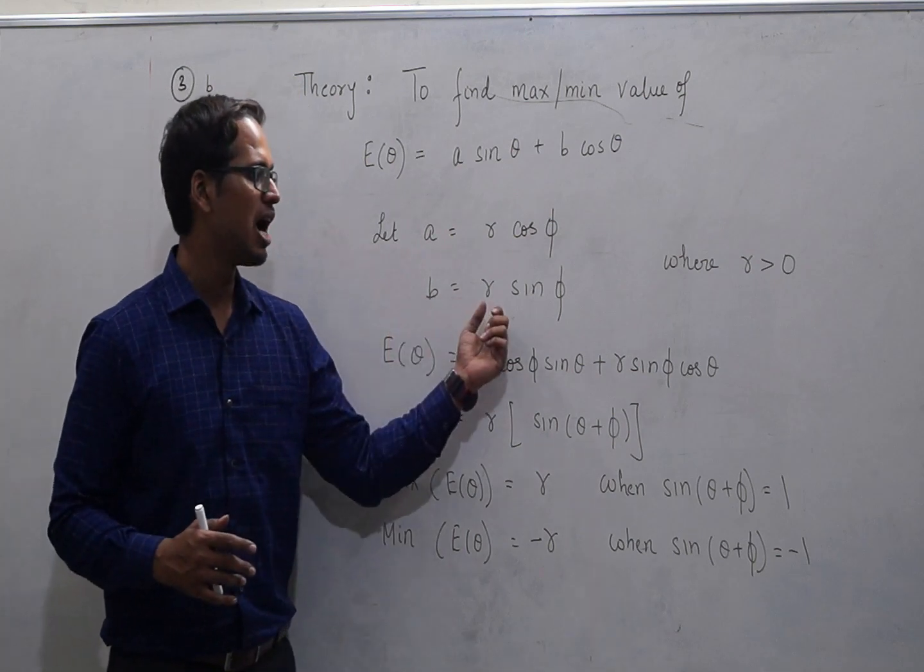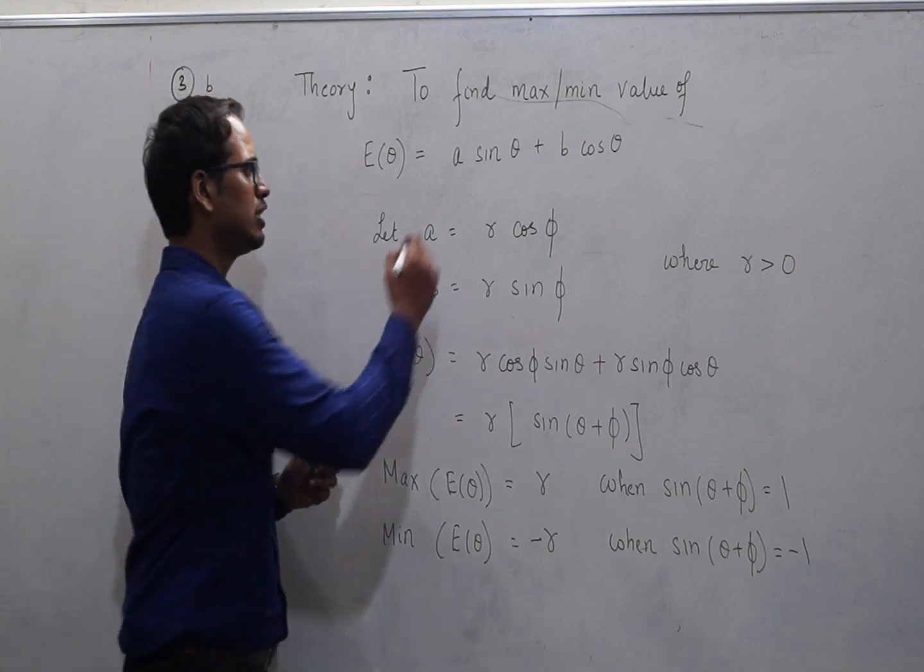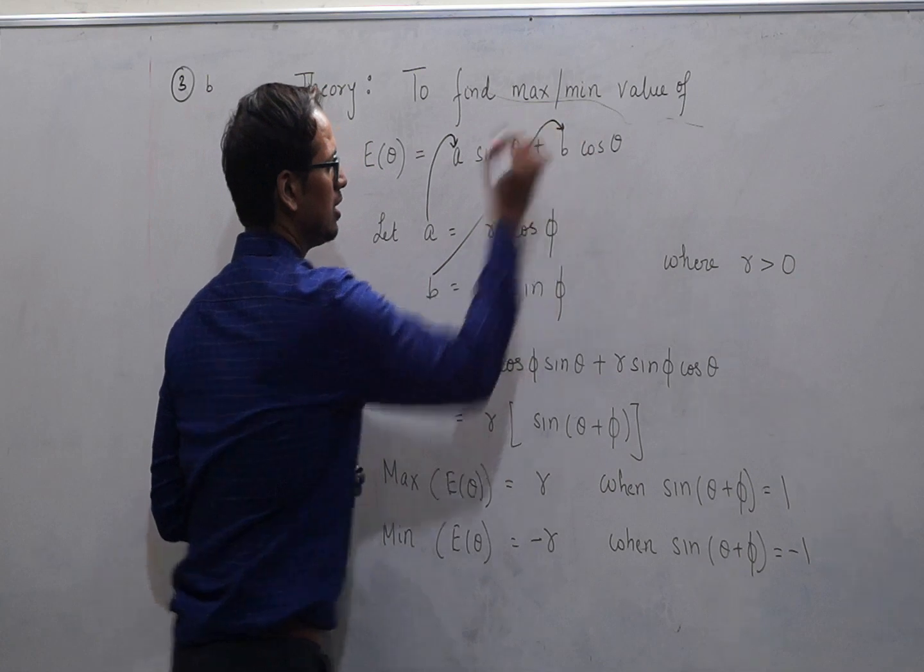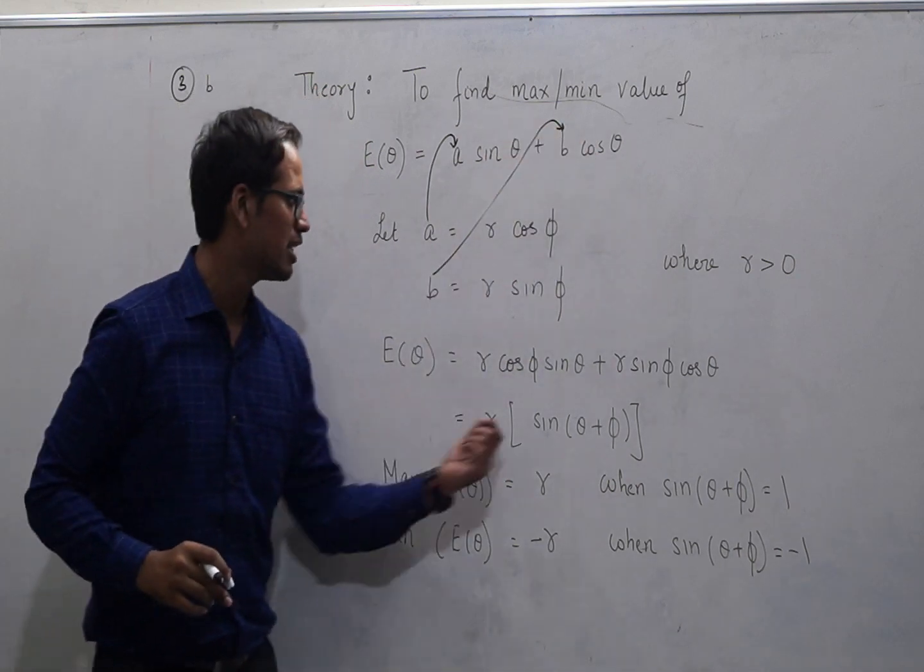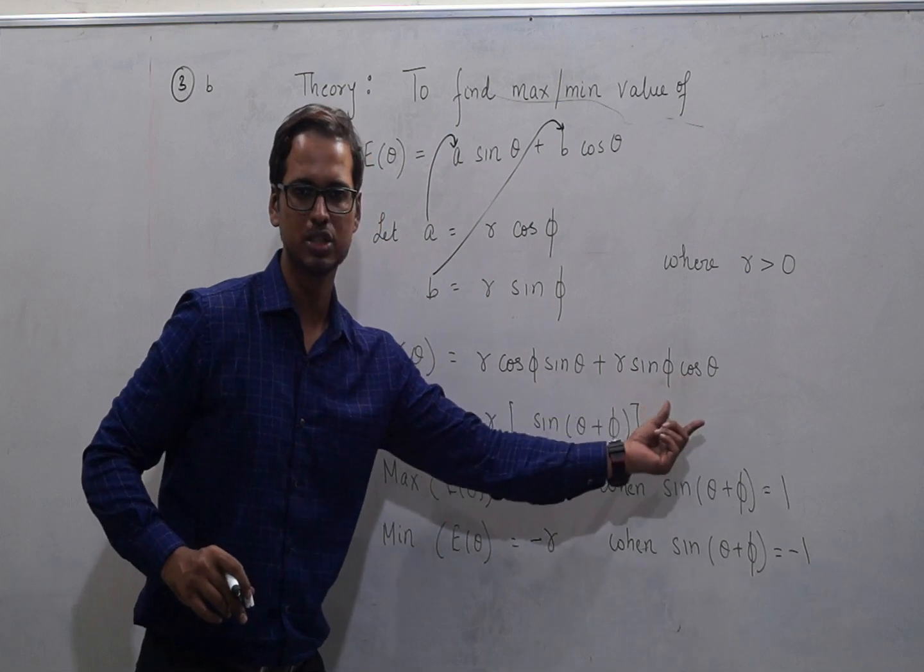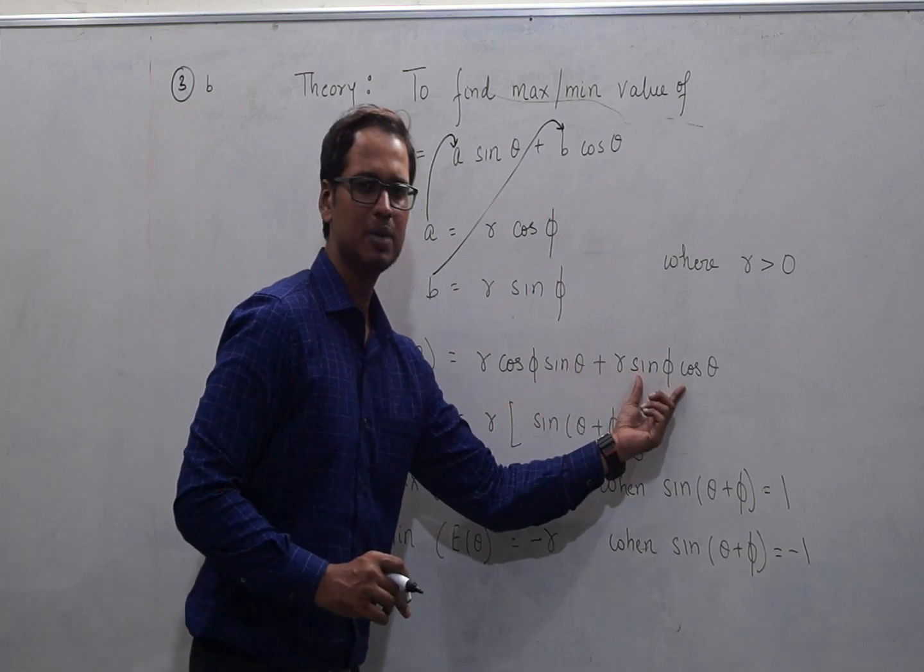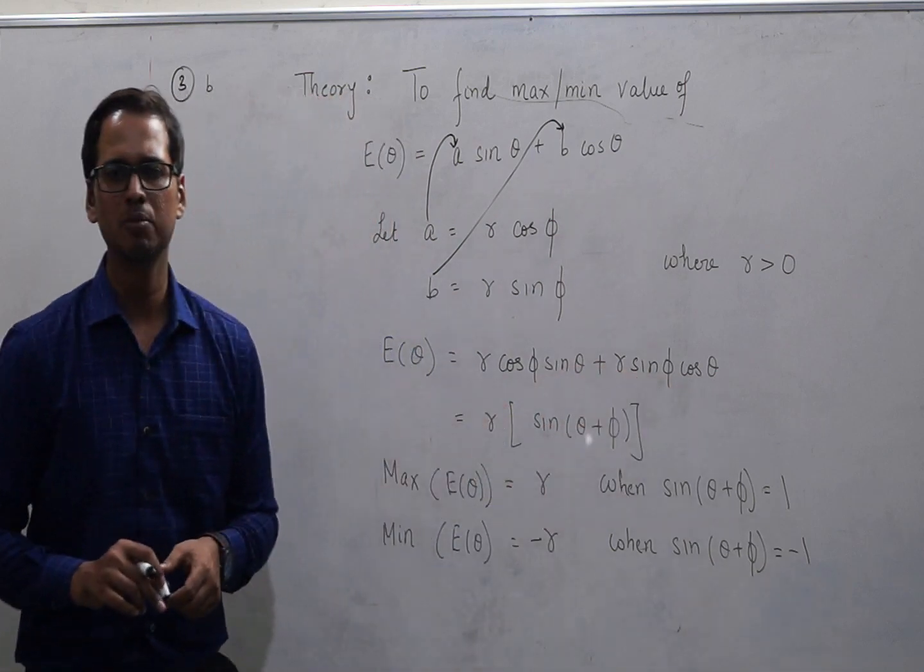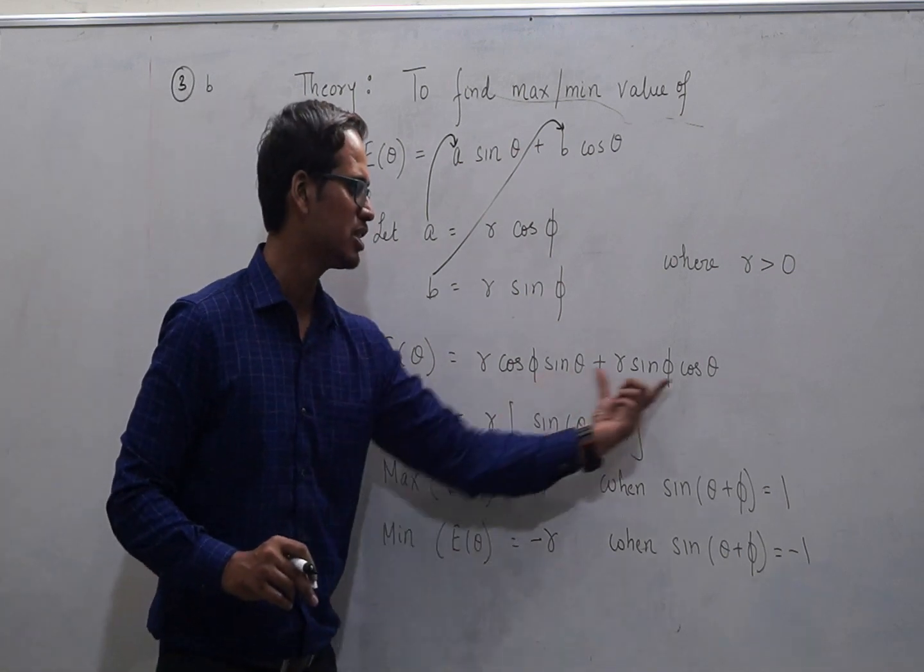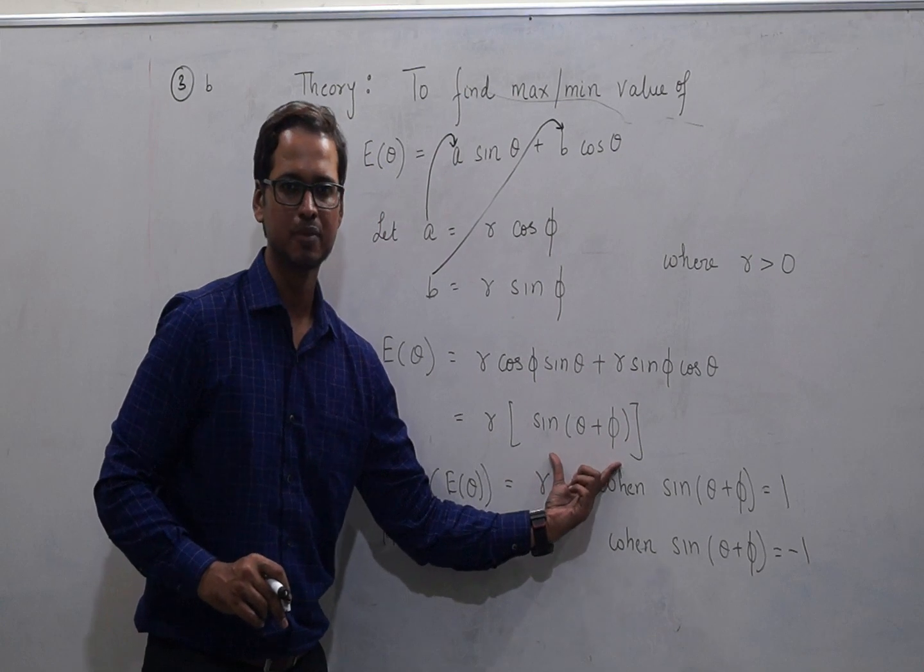Then similarly, b can be assumed to be some r sine phi. When you replace this back in this equation, this expression converts itself to r cos phi sine theta plus r sine phi cos theta. If you take the r term out, we realize that the rest of the term follows the compound angle formula which we discussed in part A of the question. So in the reverse fashion, I can club this term to a single term and make it sine theta plus phi.